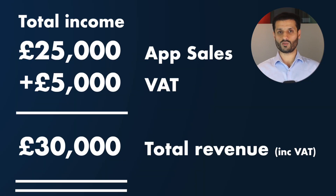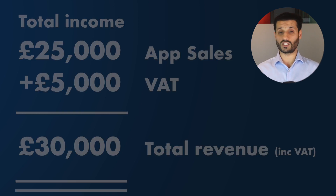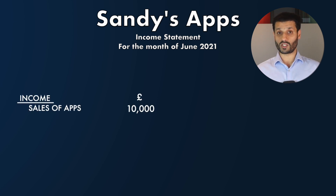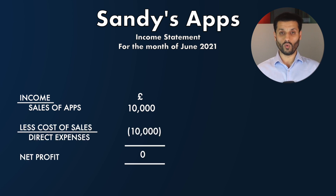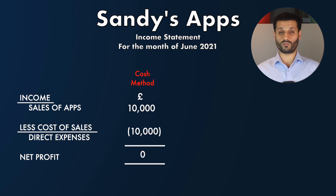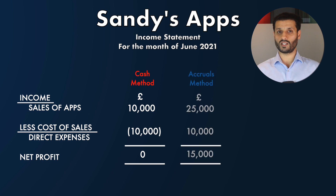The business had sold and delivered five apps at £5,000 each plus VAT, providing total income of £25,000 plus £5,000 of VAT in June. Two clients paid in June, a total of £10,000 plus VAT, and the other three did not pay until August. Sandy's expenses amounted to £10,000 for the month, all on the cash basis. Under the cash basis, revenue is £10,000 and expenses £10,000, resulting in no profit or loss. Under the accruals method, revenue is £25,000 and expenses £10,000, showing a profit in June of £15,000.